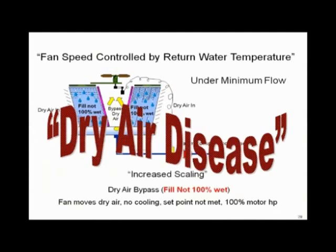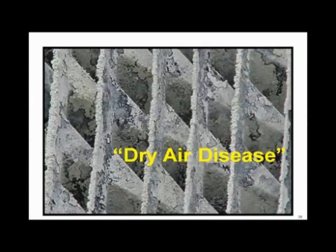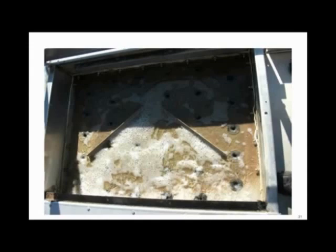What does it look like when you underflow a tower? You get dry and wet zones side by side, and right in between you start building up rocks — scale deposits. All of that can be solved with a weir dam. Here's another picture of a hot deck with a weir dam for 50% turn down — it ensures there are no passages where dry air can get through, so any air entering will always reach a wet section of fill.